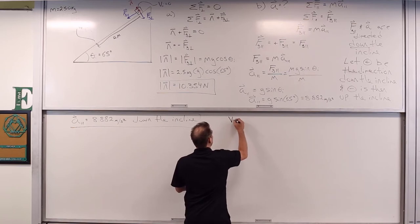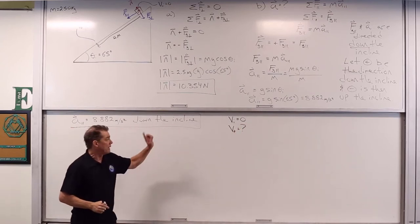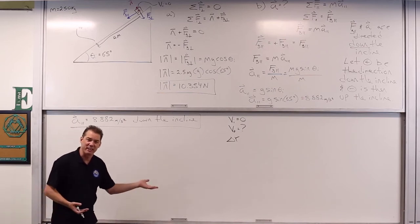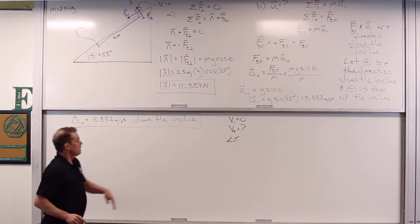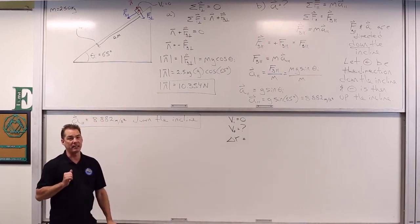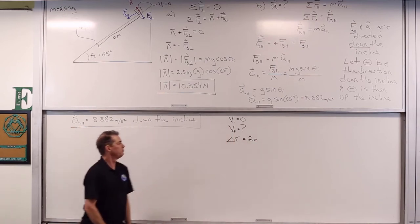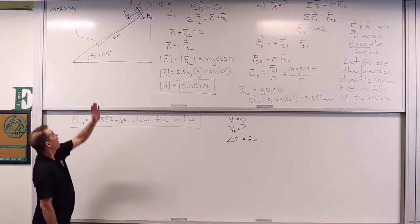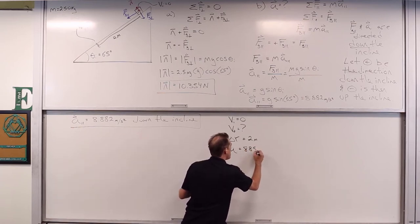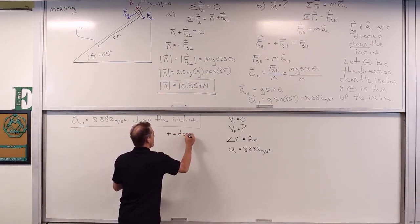We know the initial velocity is zero. We want the final speed after sliding 2 meters. The displacement is delta R = +2 meters, positive because down the incline is positive. The acceleration is 8.882 m/s² — keeping that positive since it's down the incline. Even in one dimension, sign consistency matters.